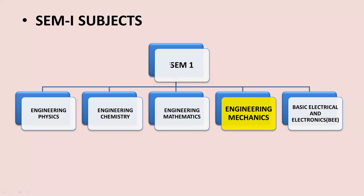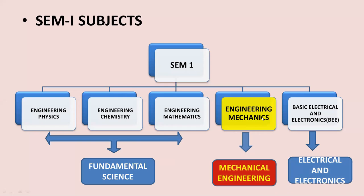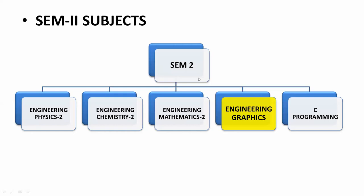Before we start with the subject introduction, let us see the different subjects for your Semester One and Semester Two of your first year. In Semester One you have a total of five subjects: Engineering Physics, Engineering Chemistry, and Engineering Mathematics — these three subjects are from the fundamental sciences. Then Basic Electrical and Electronics, called the BEE subject, from electrical and electronics engineering, and Engineering Mechanics from mechanical engineering.